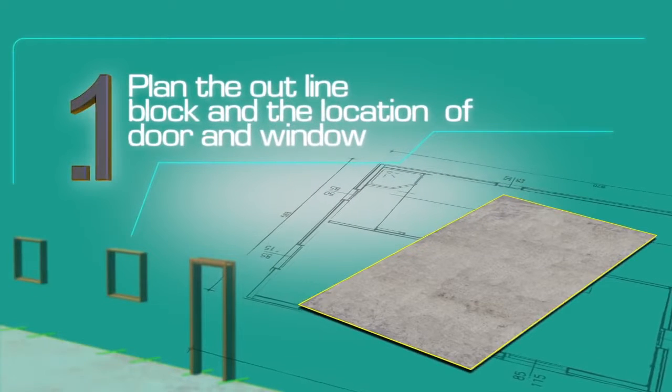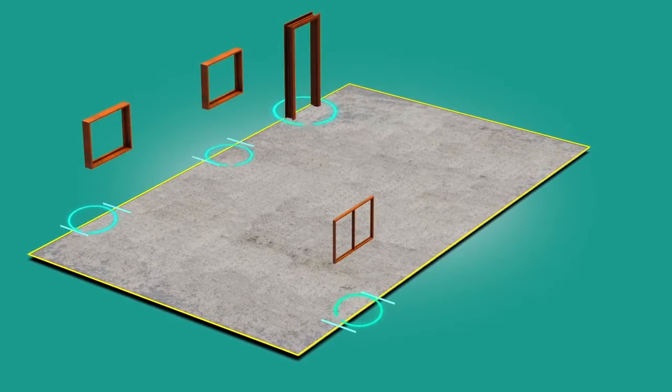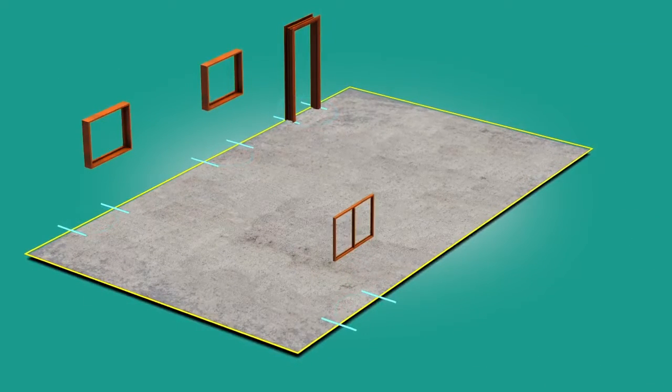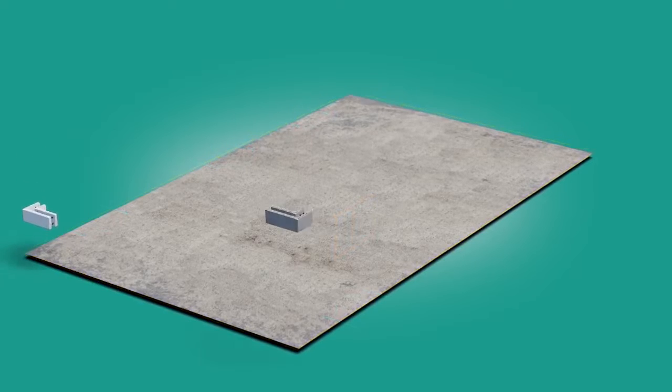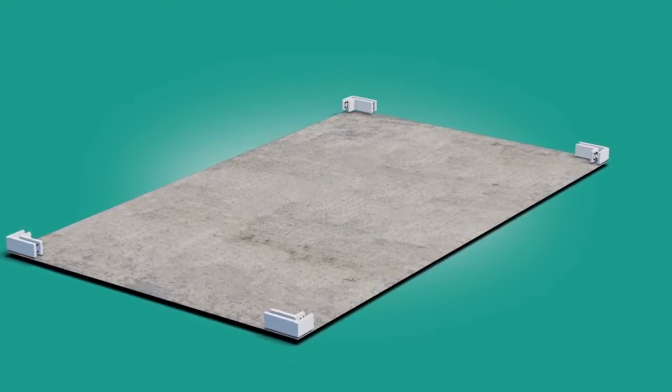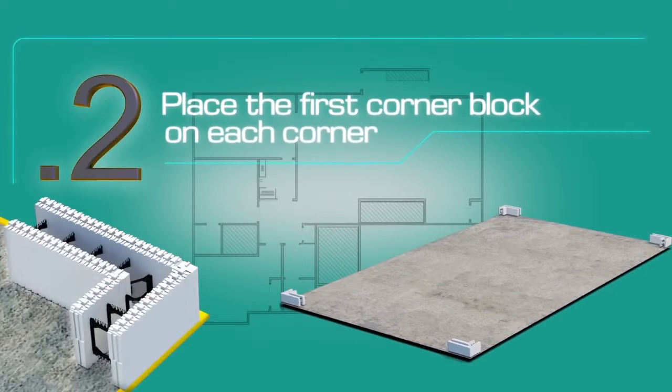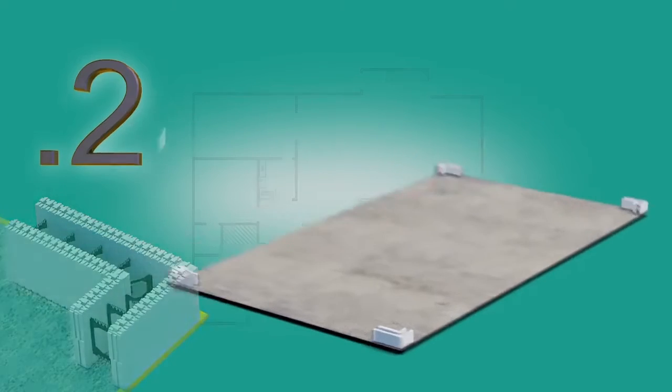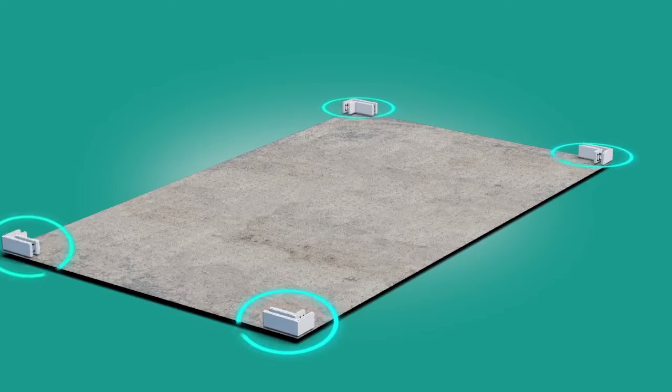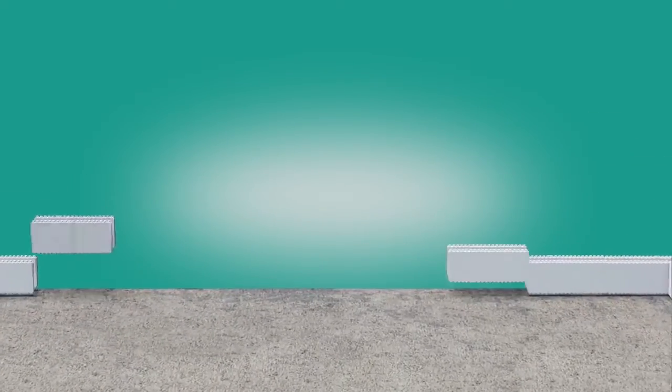Plan the outline of the block and the location of the door and window openings on the footing or slab. Place the first corner blocks on each corner, then lay the straight blocks toward the center of each wall segment.